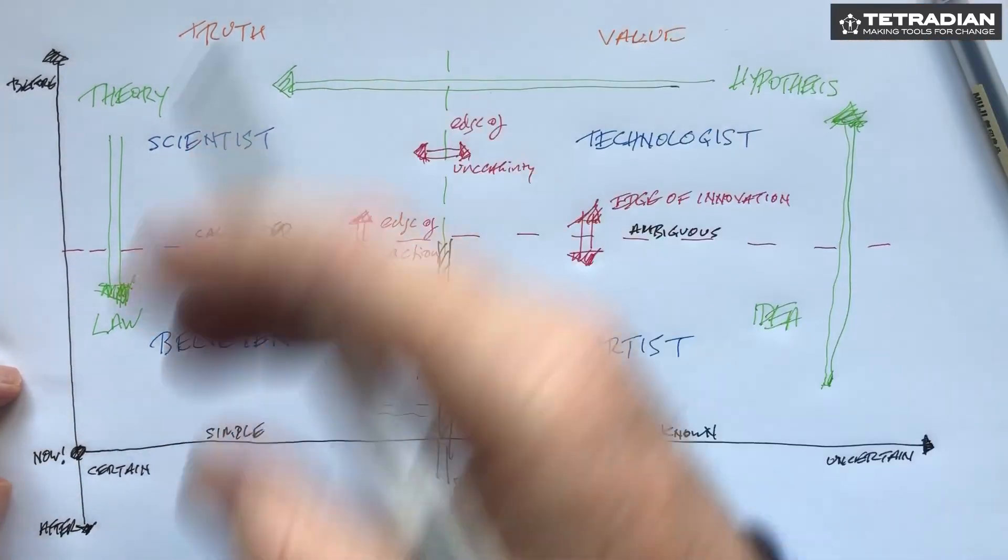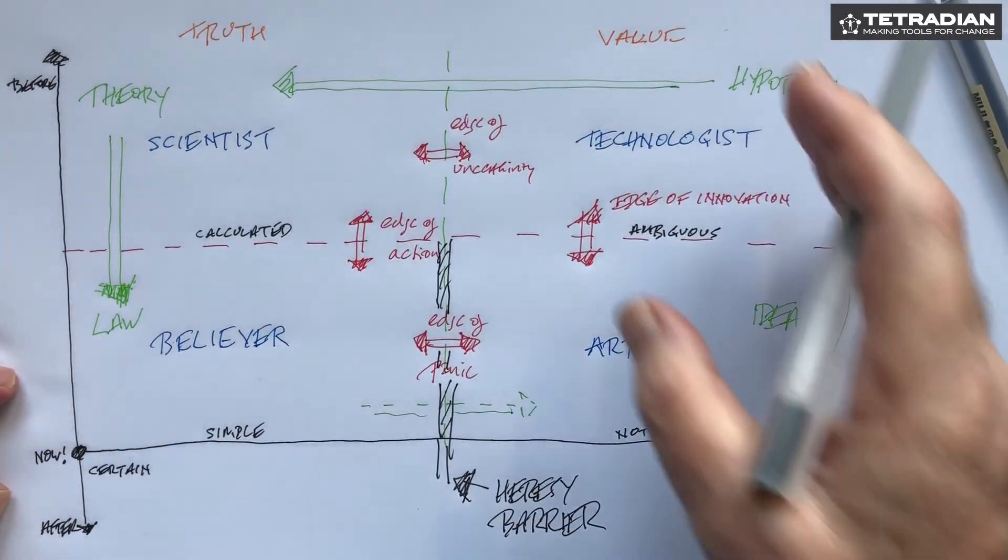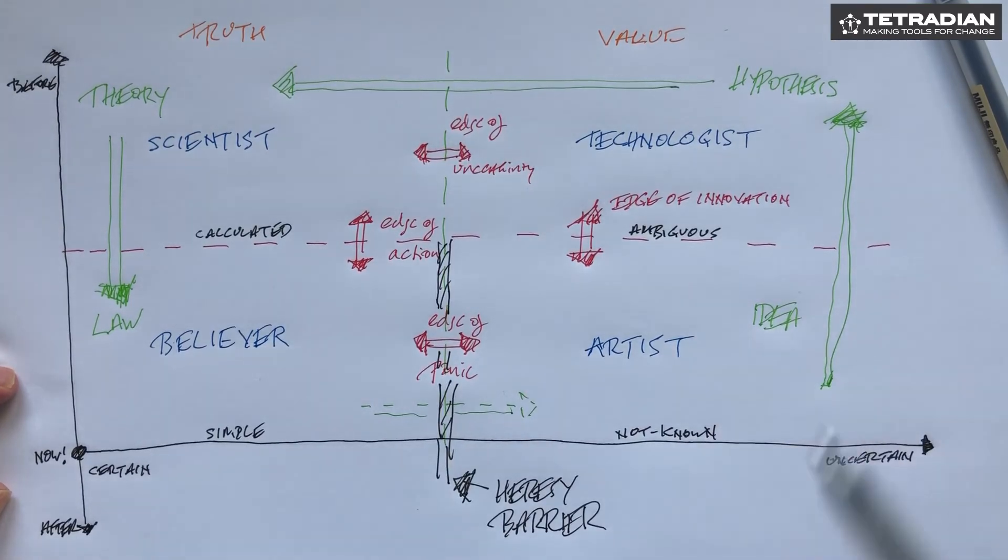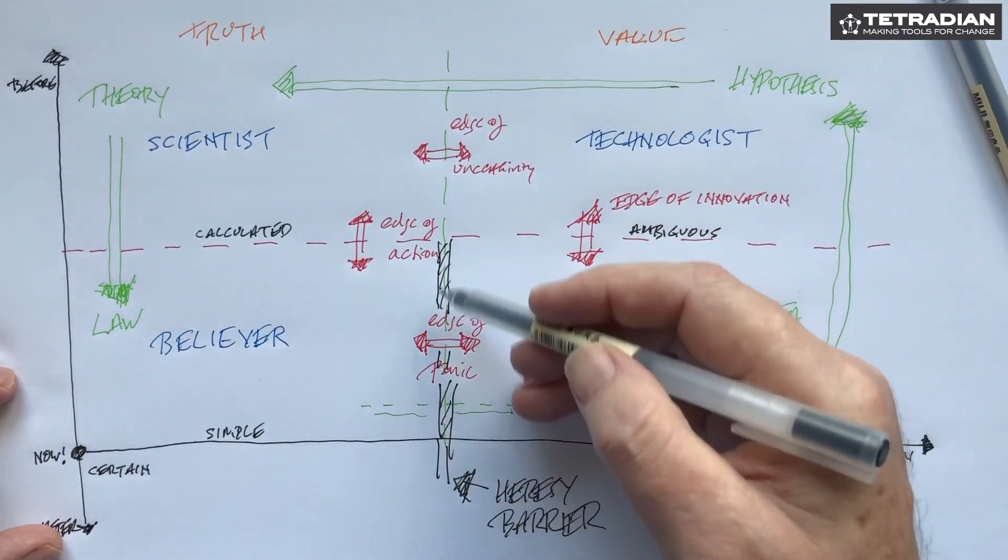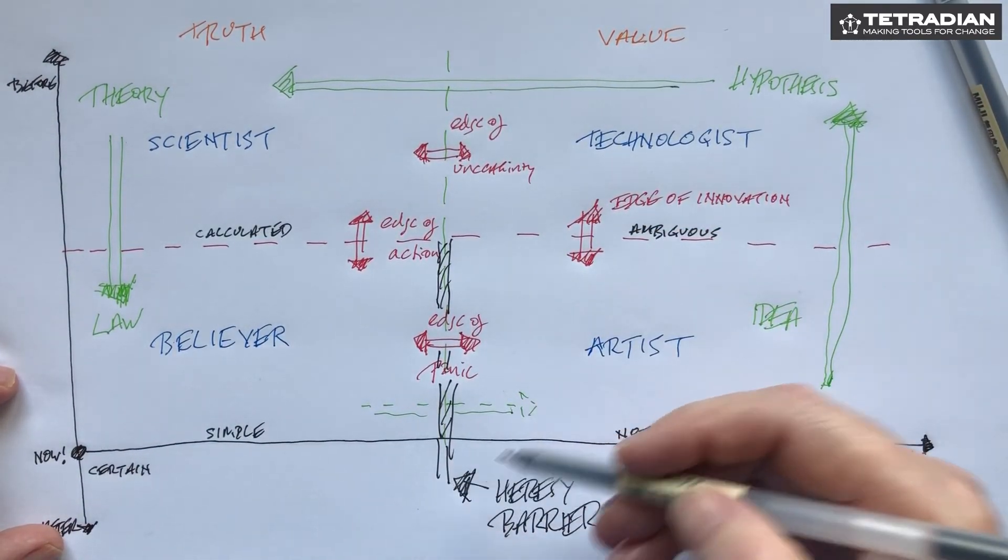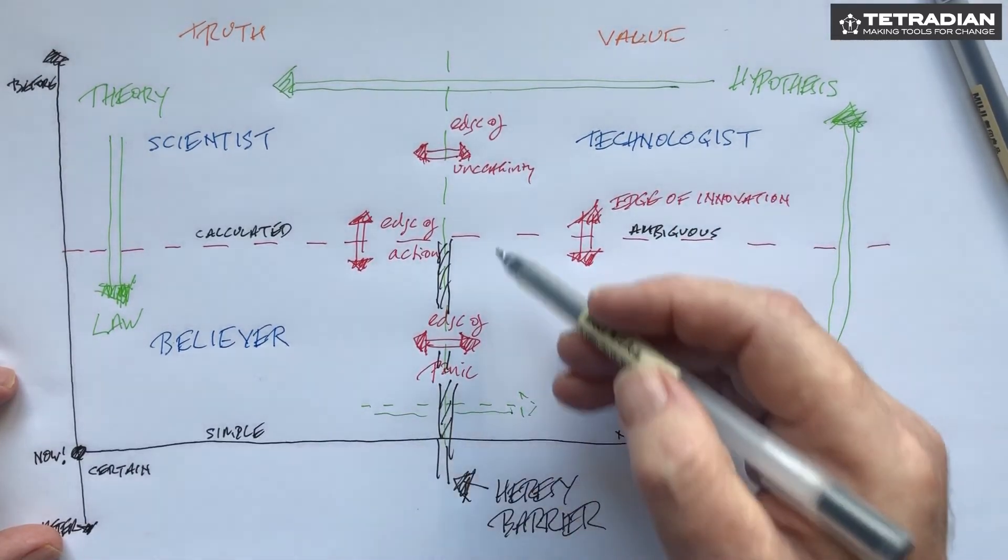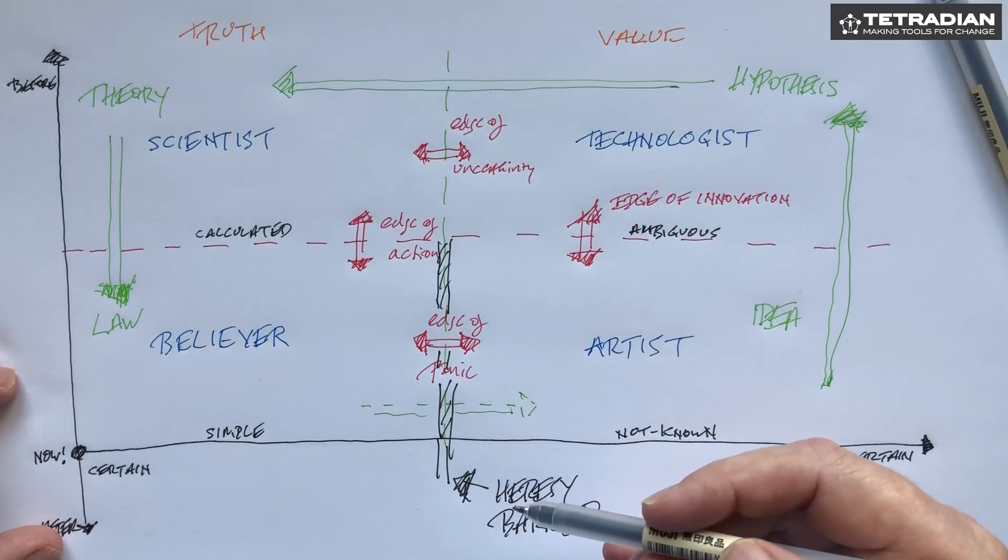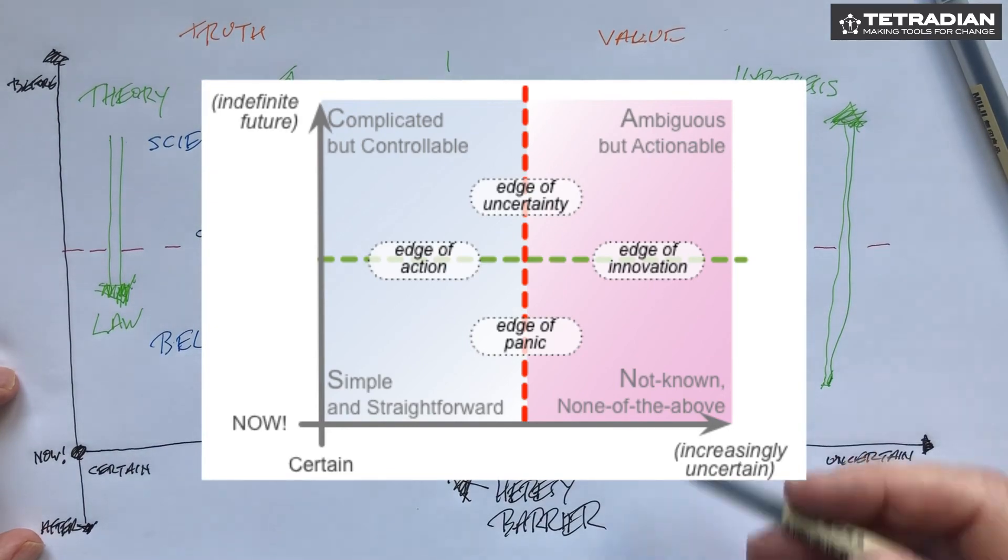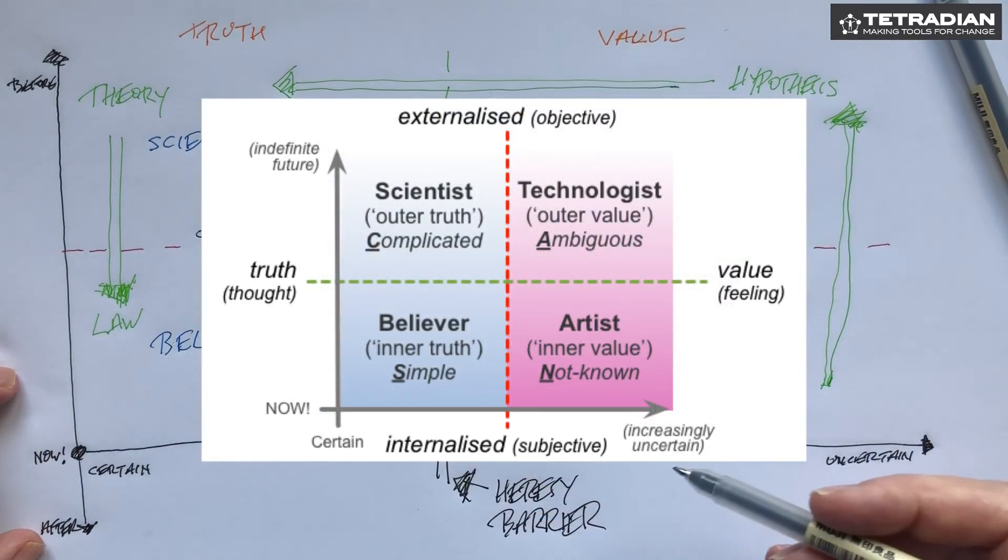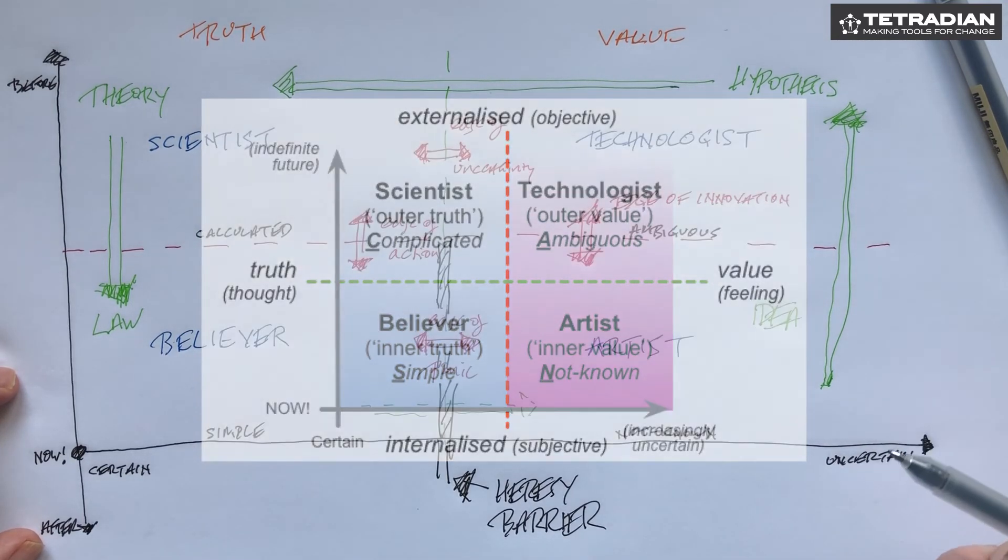So there's a nice way of describing ways of looking at and the kinds of thinking, the modes of thinking that we need, how we transition between them, but also to beware of getting stuck in any one of these positions and particularly that one of the heresy barrier. So SCAN is really useful for helping us make sense of these kind of transitions, the changes in modes of thinking that we need to make something happen. It's a very useful tool for this kind of purpose.